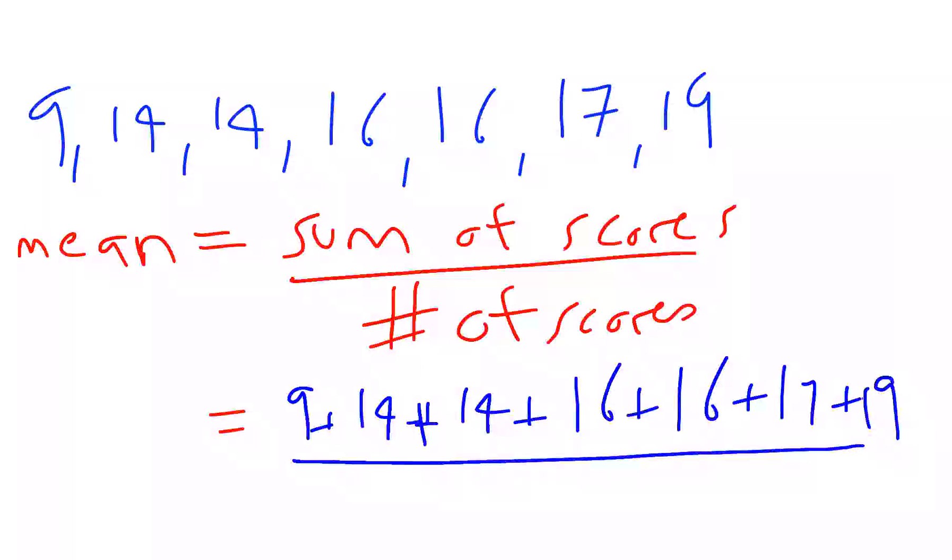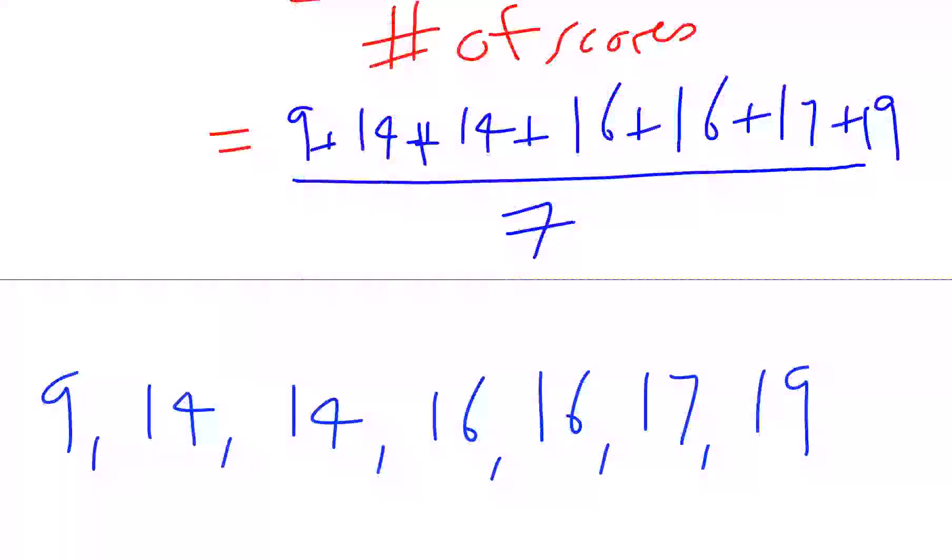And we divide by how many there were: 1, 2, 3, 4, 5, 6, 7. We divide by 7. We show our working there, but I'm running out of space, so let's move on to the next page.